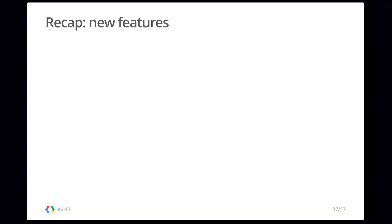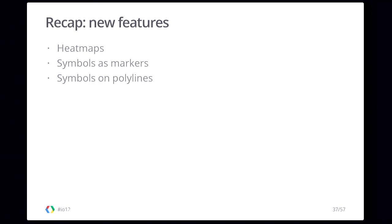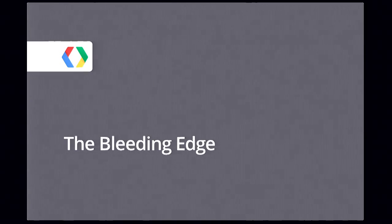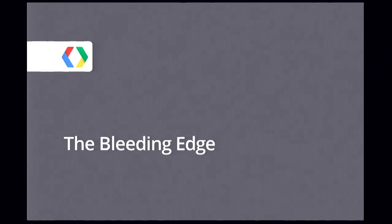To recap, there are new features in the Maps API. We now have heat maps, which allow you to represent density and intensity of your data on a map. We have symbols as markers — vector images where you can dynamically change scale, stroke color, and fill color independently. Finally, you can place symbols along polylines, enabling arrows on polylines for directions and dashed lines. All of these features are available today and work on a broad range of browsers using canvas and images.